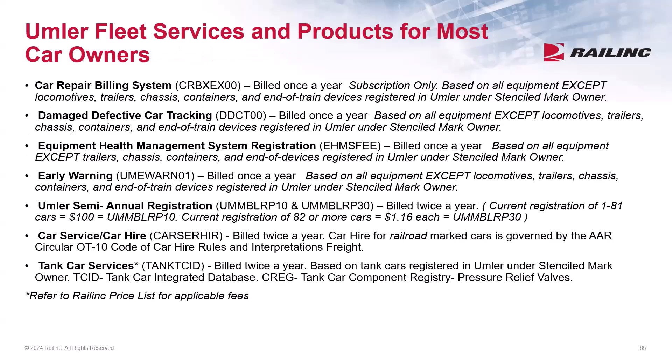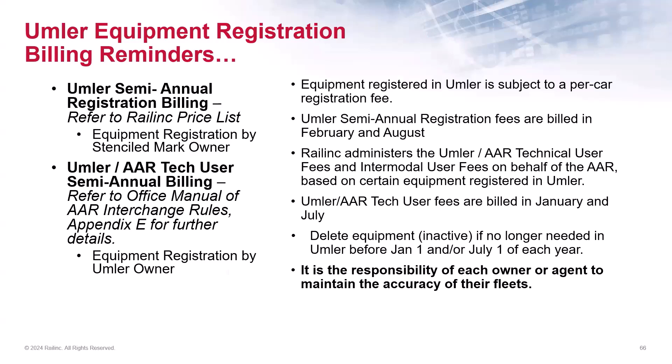Most car owners are billed for the following Umler fleet services and products. Most fleet services are billed annually except for the Umler car service, car hire, and 10 car service applications, which are billed semi-annually. For more details, please refer to the Railinc price list located on Railinc's main site. It's important to remind owners or agents that equipment registered in Umler is subject to a per-car registration fee, which is billed semi-annually. Railinc administers the Umler AAR tech user fees and nominal user fees on behalf of the AAR. Those fees are billed in January and July, and the Umler semi-annual registration fees are billed in February and August. There's equipment under your company mark that has been sold, destroyed, or is no longer in use — they should be deleted from Umler prior to January and July 1st.